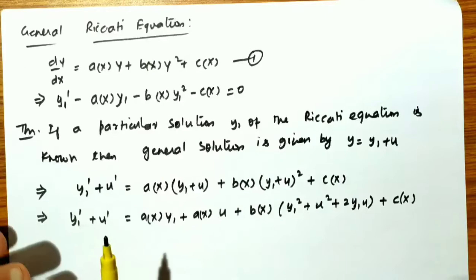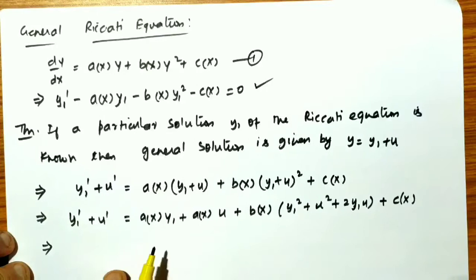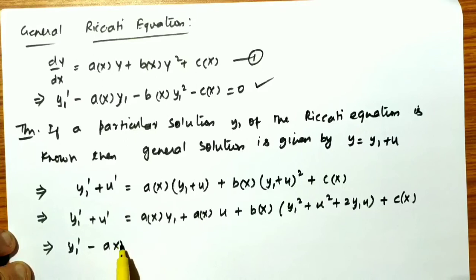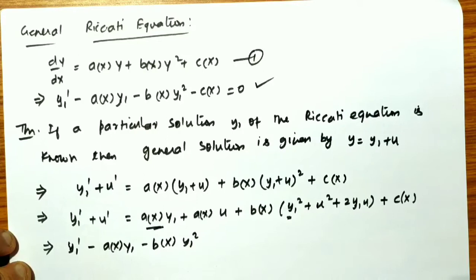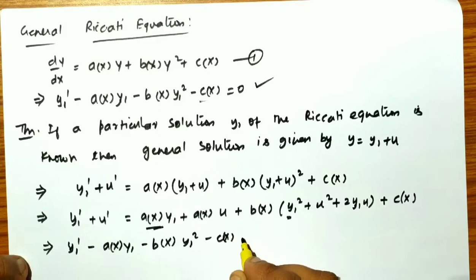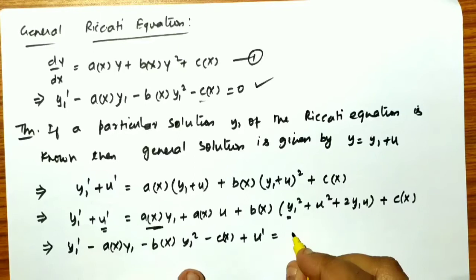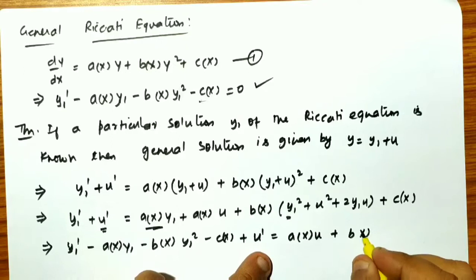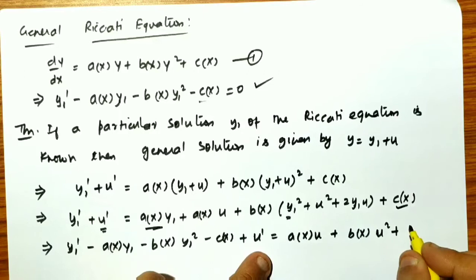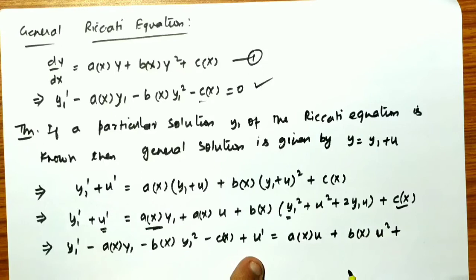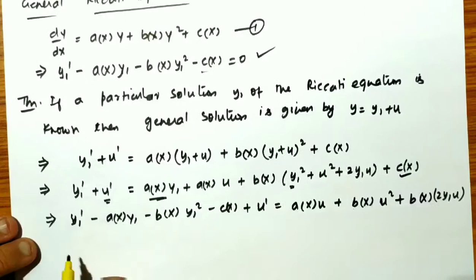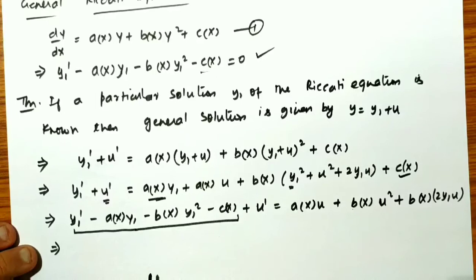I will use this result in the equation. Looking at the terms: y₁' − a(x)y₁ − b(x)y₁² − c(x) equals zero, since y₁ is a particular solution. So this expression becomes zero. Only u' = a(x)u + b(x)u² + 2y₁b(x)u remains — that is, only the terms b(x)u² and b(x)·2y₁·u are left.